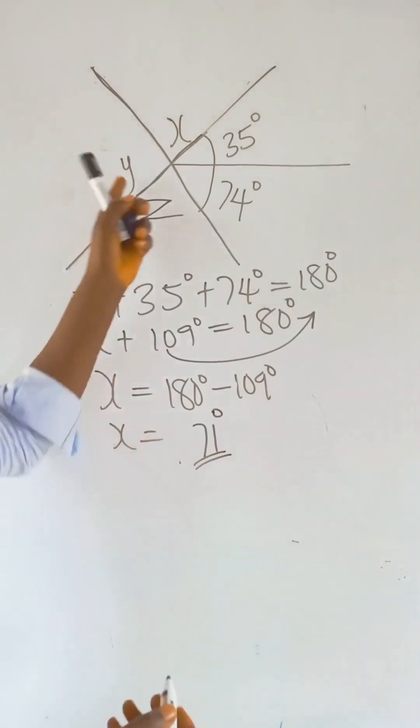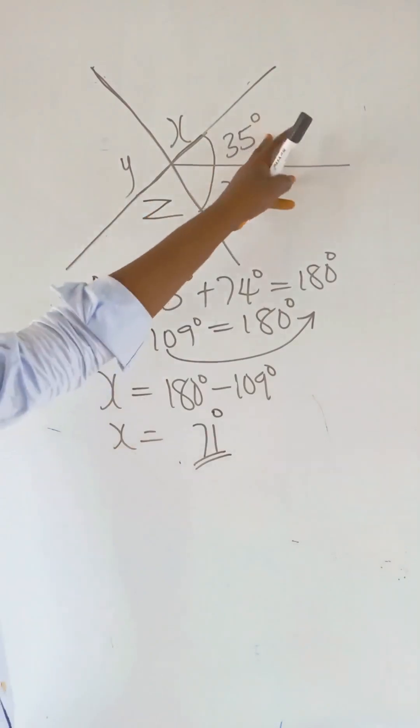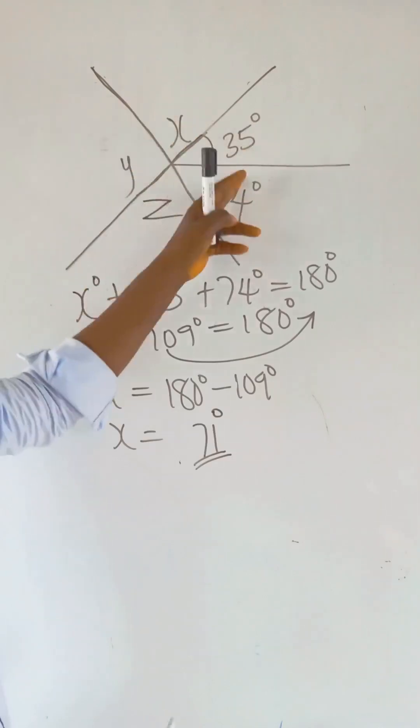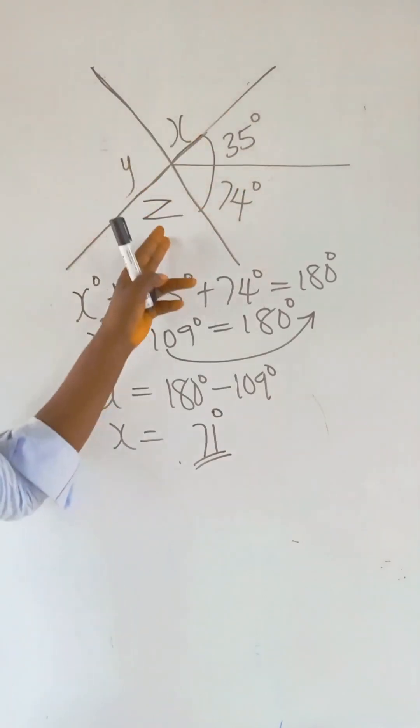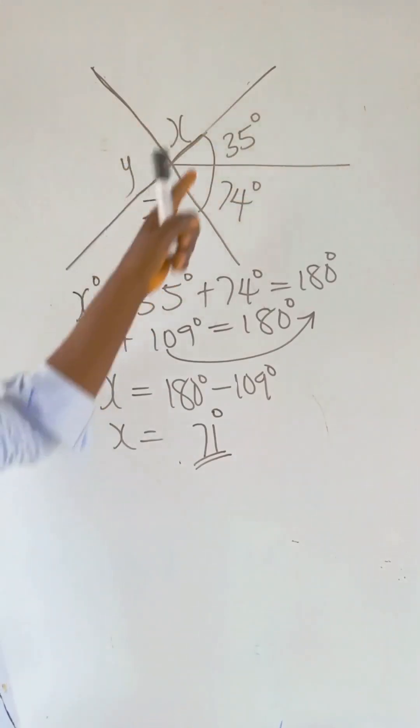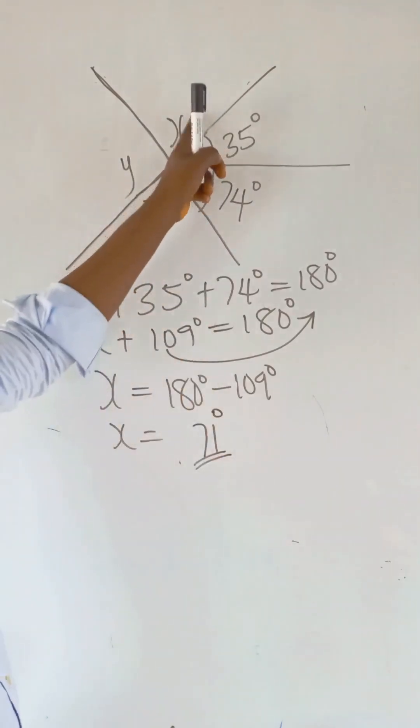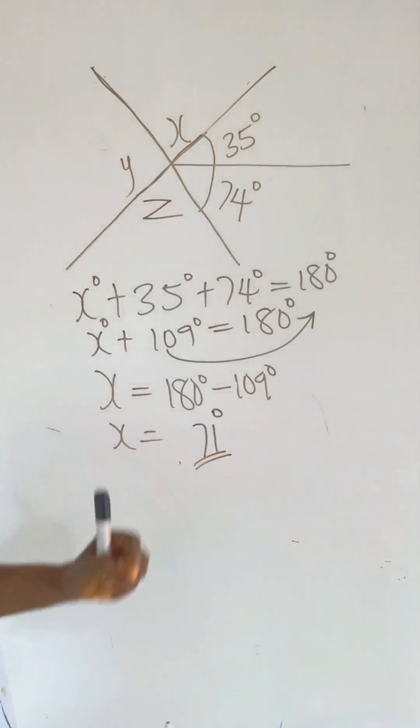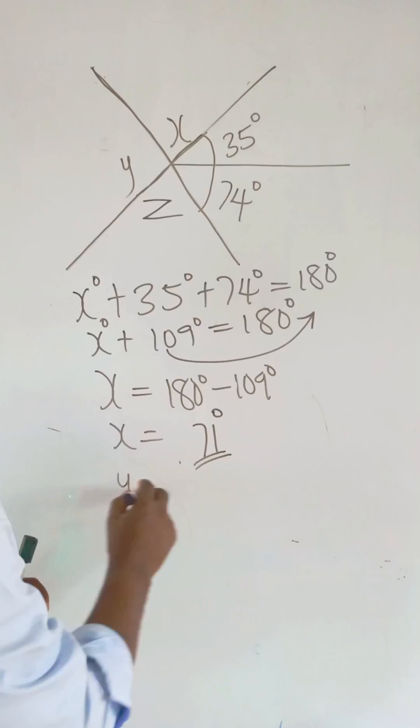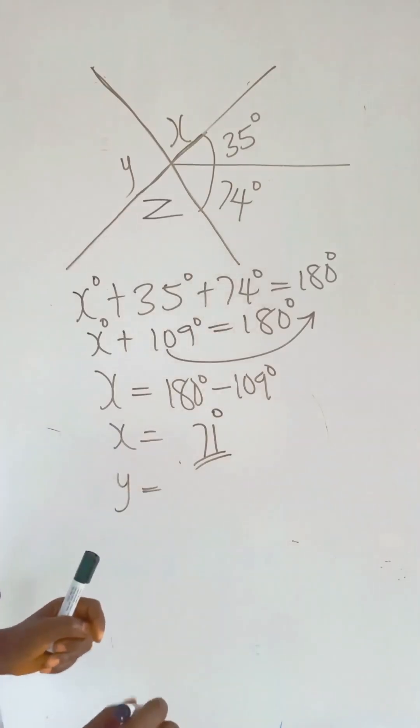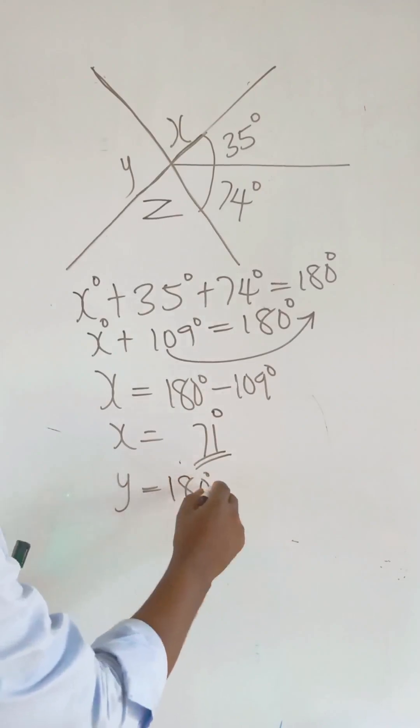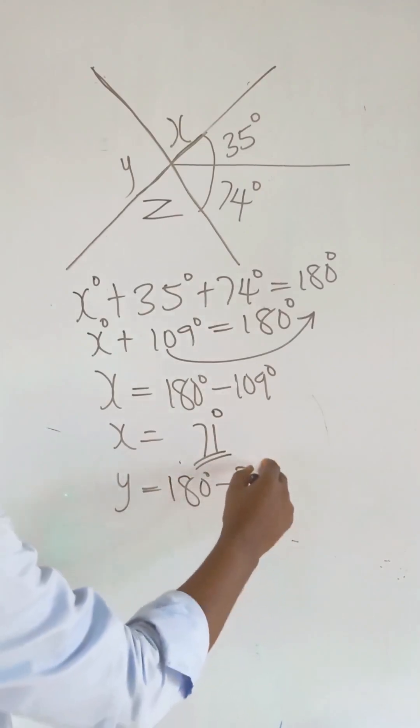There are two ways you can use to resolve Y. Either you add this to get this, because this angle here and angle here are equal, and this and this are also equal. Now you sum this to get this, or since you've gotten this to be 71, then you minus it from 180. So our Y becomes equal to 180 degrees minus 71 degrees.